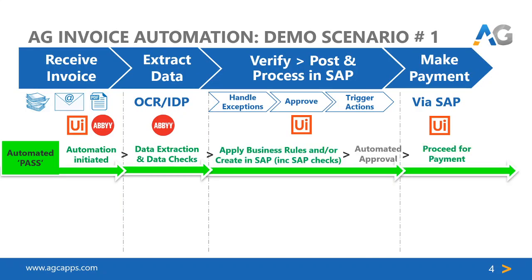We have put together three demo scenarios to share with you. The first of which is what one may call the happy path, as the figure illustrates here. The data in the invoice is extracted successfully by Abbyy. UiPath then validates the data and kickstarts the invoice posting transaction in SAP. It keys in the data as if it's acting on behalf of an AP clerk and posts the invoice. There are no blocks or anything that require further interventions, and the invoice is ready to be paid. And now let's have a look at the demo itself.